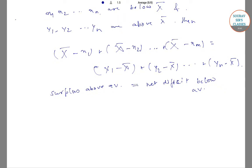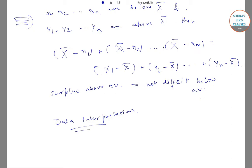Note that this property is very helpful in the data interpretation section where there are large values to be calculated and most of the time we just need the lump sum value. So the property — that the surplus value above average equals the net deficit below average — is often very useful while solving data interpretation.